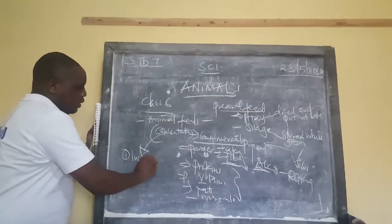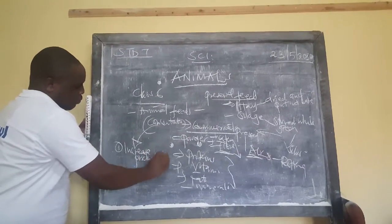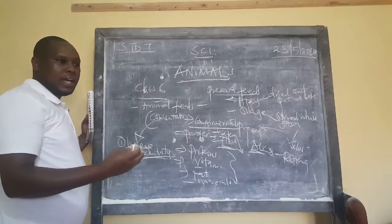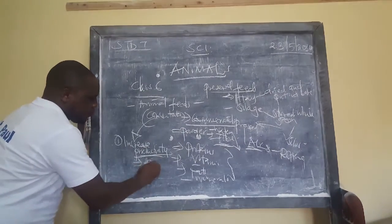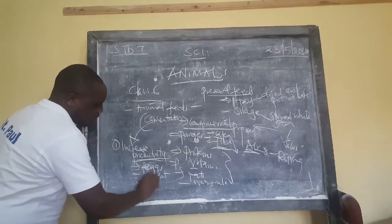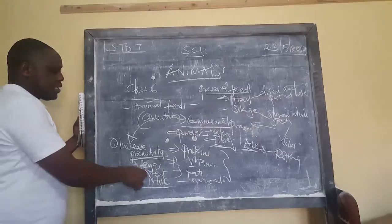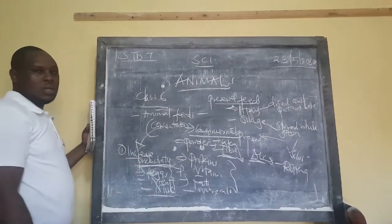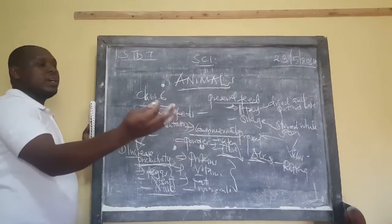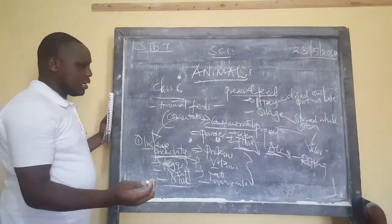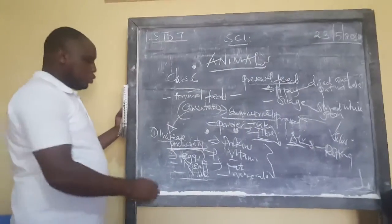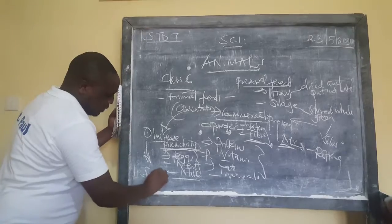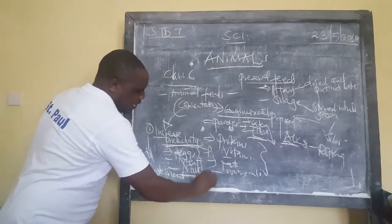The main functions of concentrates: number one is to increase productivity. Whenever we are keeping animals — cows, goats, or hens — we keep them for meat or milk. When we give concentrates, we want the animals to produce more. Number two, concentrates supplement fodder and pasture, so animals are not just feeding on grass.